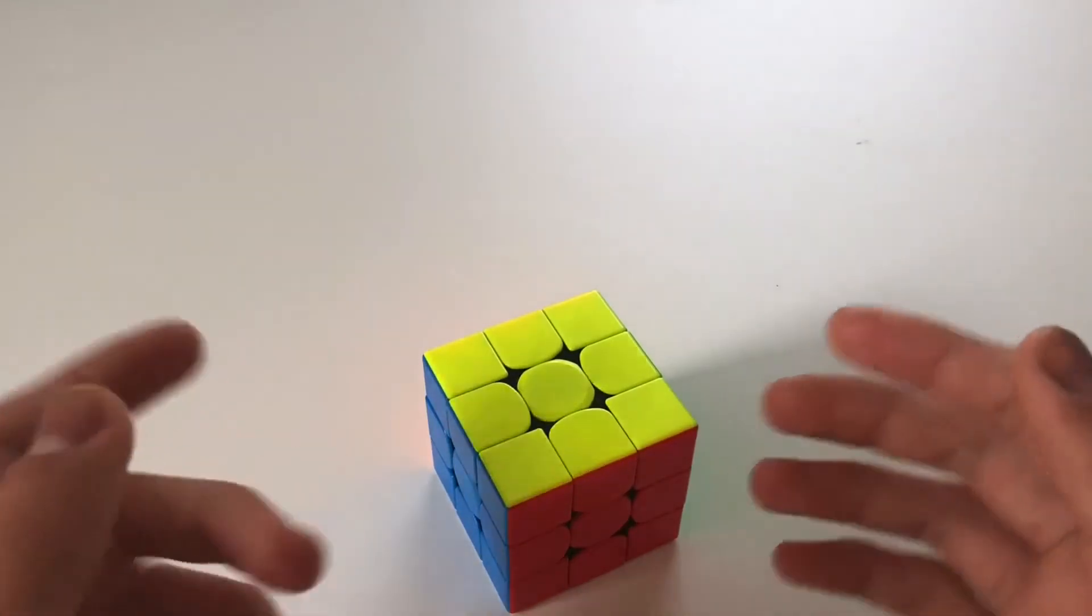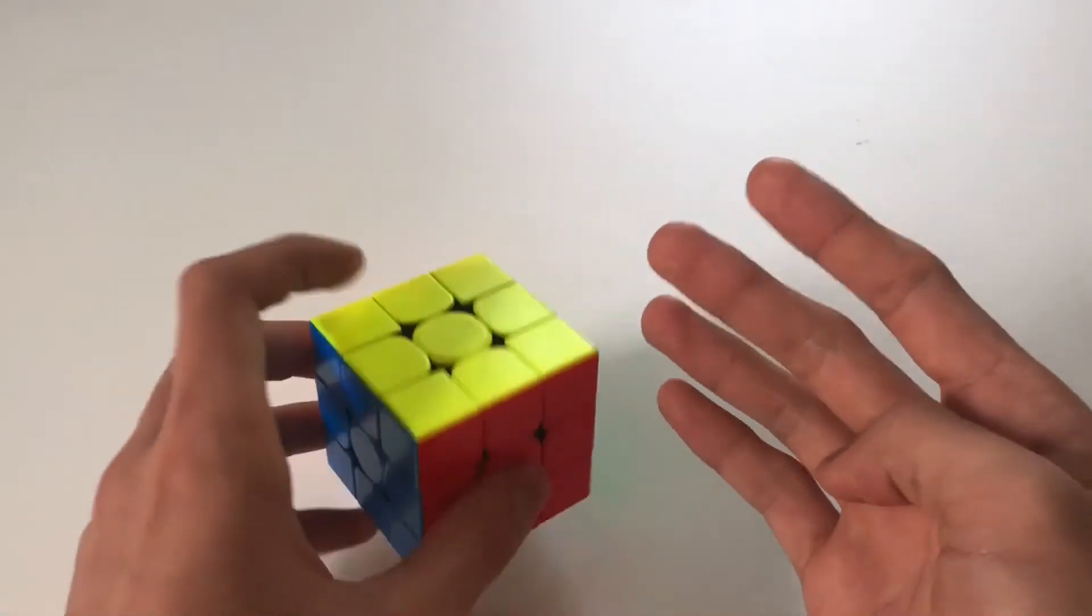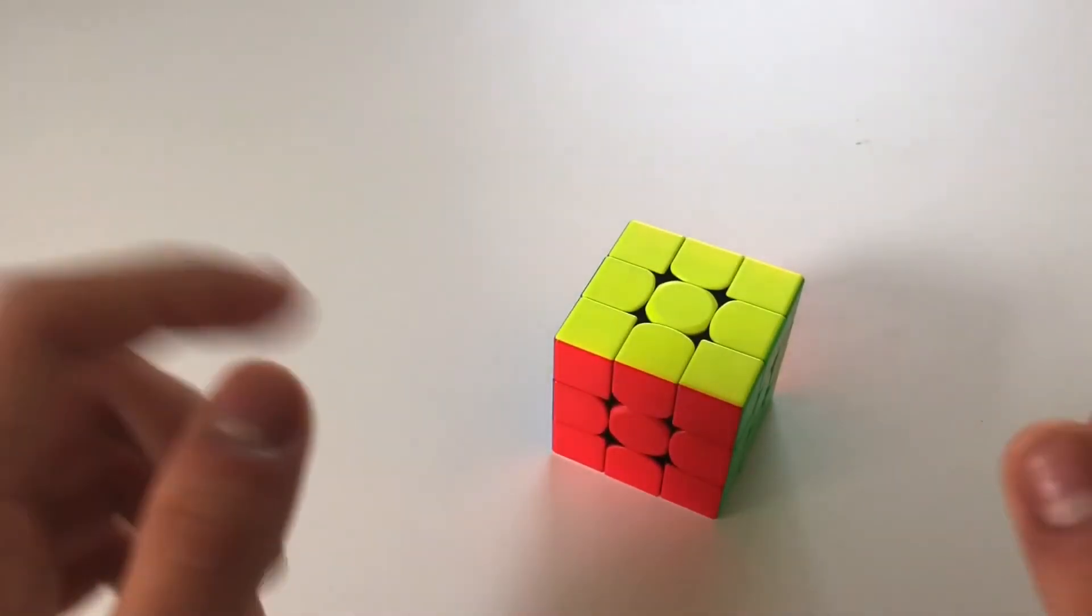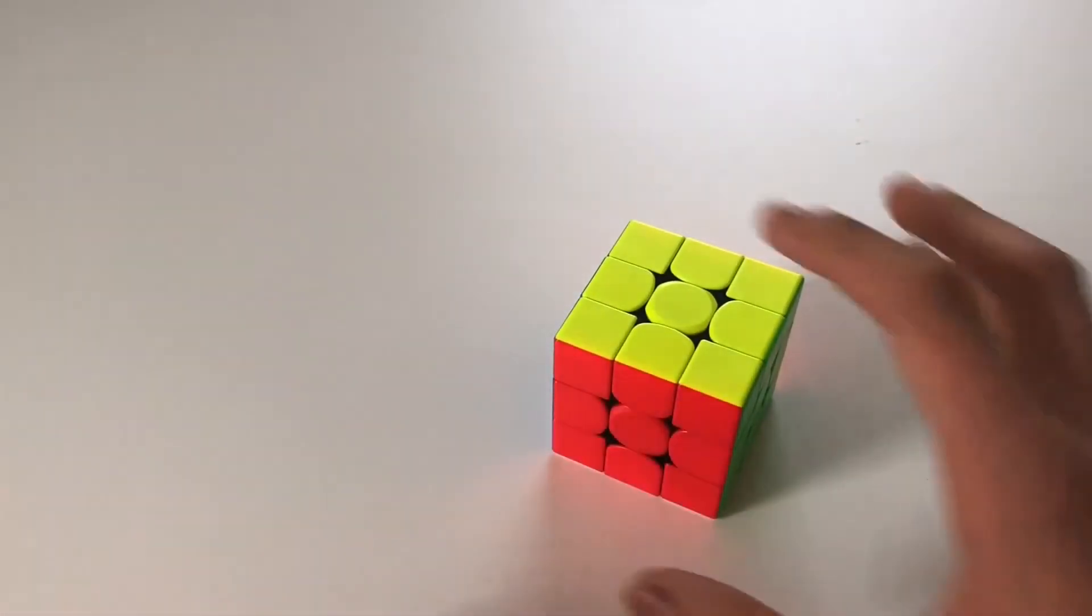And well, now you know how to solve all four of your GPRMs using only one algorithm. All four of the algorithms will be in the description below, and happy cubing!